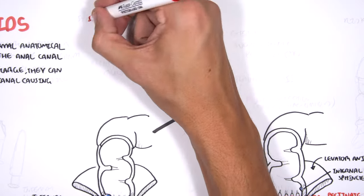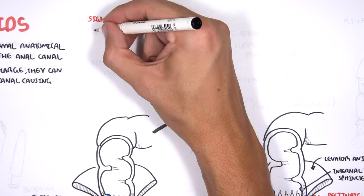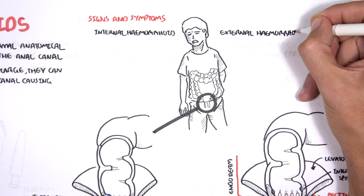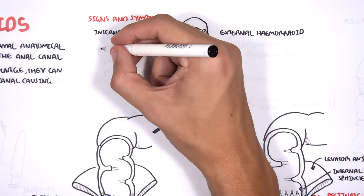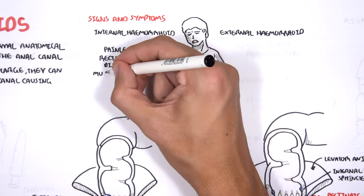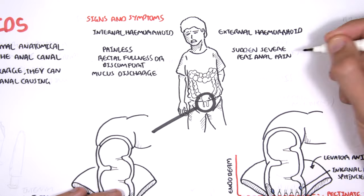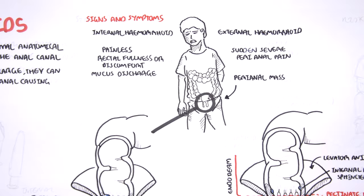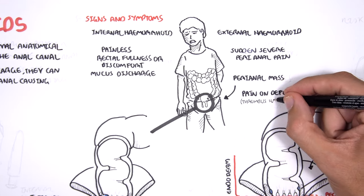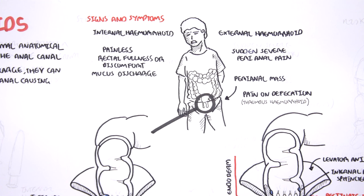The signs and symptoms of hemorrhoids differ a bit depending if it's an external hemorrhoid or internal hemorrhoid. An internal hemorrhoid can often be painless, but there can be a feeling of rectal fullness or discomfort and mucus discharge. External hemorrhoids are quite painful. They can cause sudden severe perianal pain, and a perianal mass might be felt. There can be pain on defecation, particularly if thrombosis occurs. It makes sense because external hemorrhoids are below the pectinate line, which is ectoderm in origin, so it's very well localized pain.